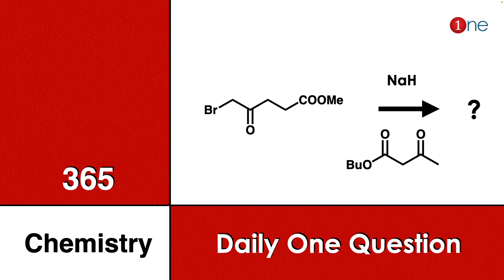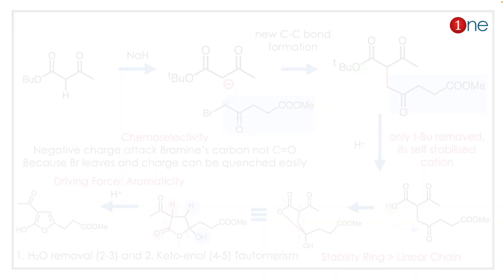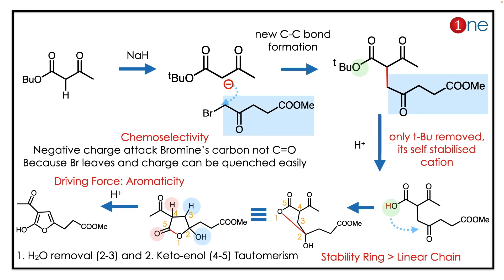Welcome to One Chemistry. This is the 365 Chemistry Series — one daily question for you. Here you have heat on one side, you are attaching bromine; on another side you have an ester. In the base, you have an active methylene group with a carbonyl on one side and an ester on the other. You have to guess what will be the final product.